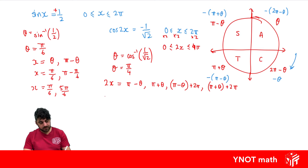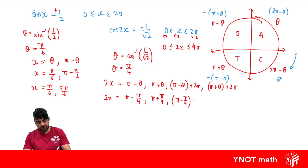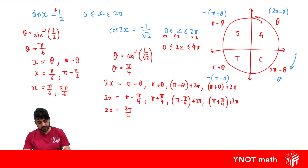Now we substitute theta equals pi on 4. So 2x equals pi minus pi on 4, then pi plus pi on 4, then pi minus pi on 4 plus 2 pi, and pi plus pi on 4 plus 2 pi. This gives us 2x equals 3 pi on 4, 5 pi on 4, 7 pi on 4, and 9 pi on 4.